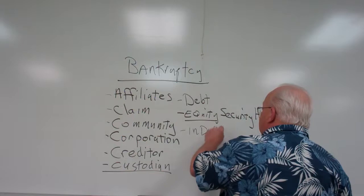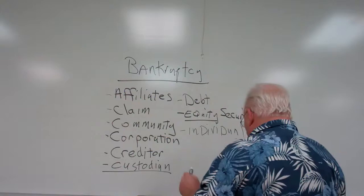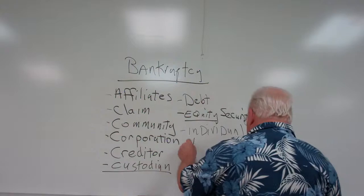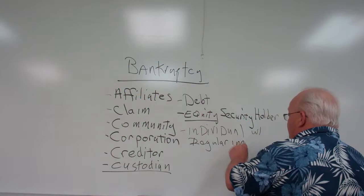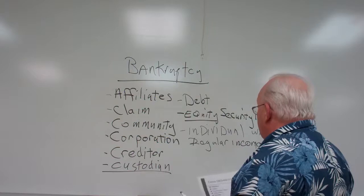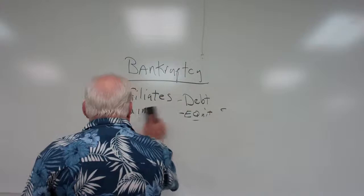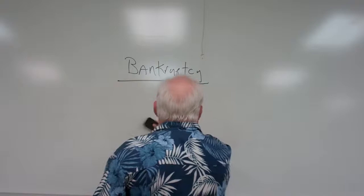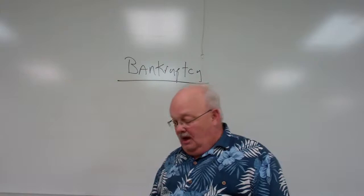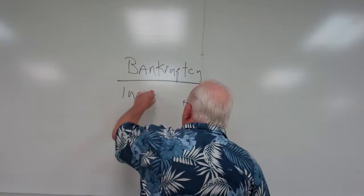Another important term is individual — what do we mean by individual? Remember, there's the question of person versus corporation. Then there's individual with regular income, which comes into play in the wage earner plan. People say they want a wage earner plan, but if you don't have any income, it's not going to work. The whole thing has to work on paper, and sometimes it doesn't work anyway because of other things. Some people walk under a rain cloud their whole life and never get out from under.